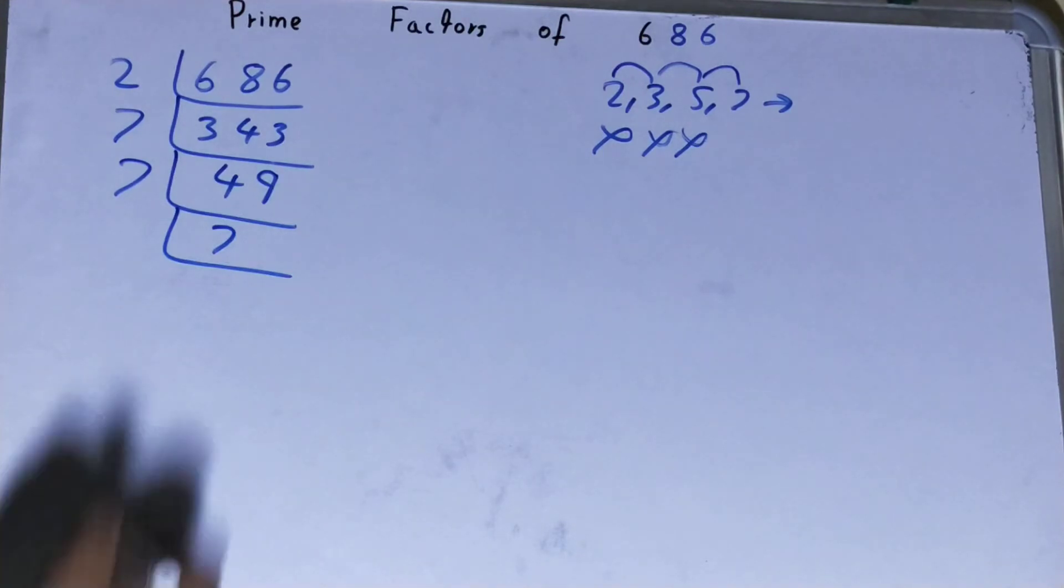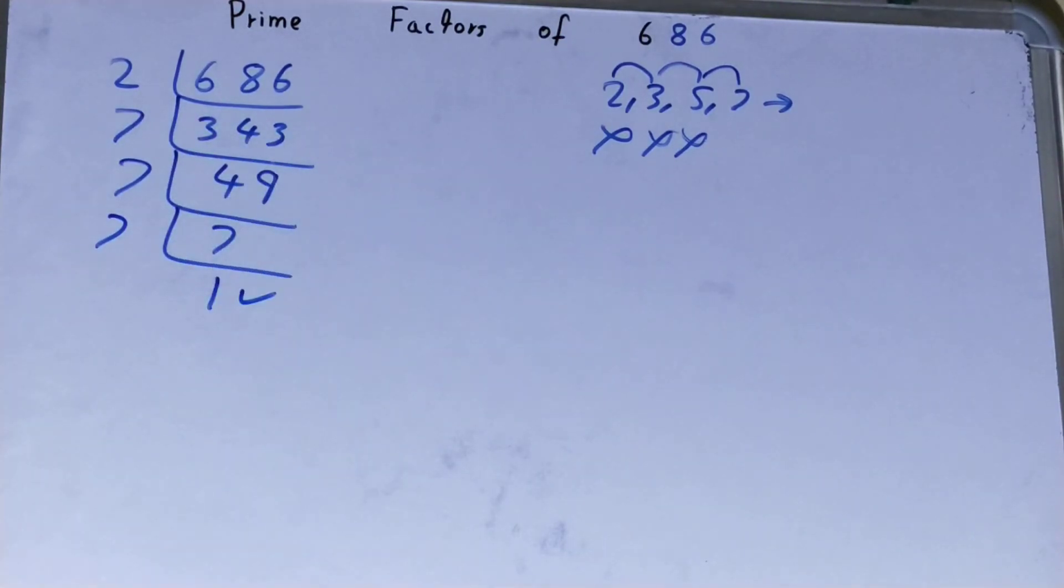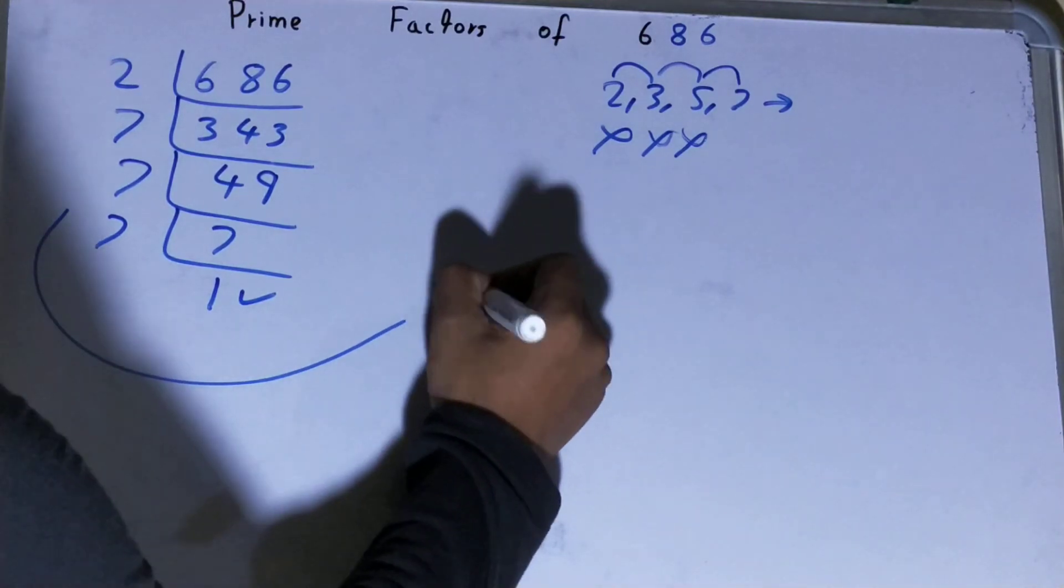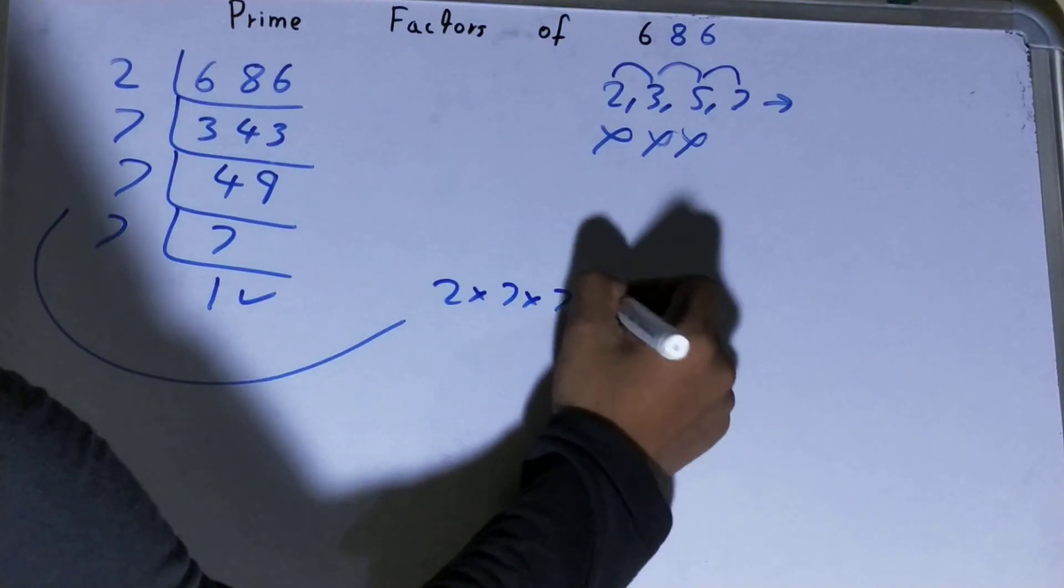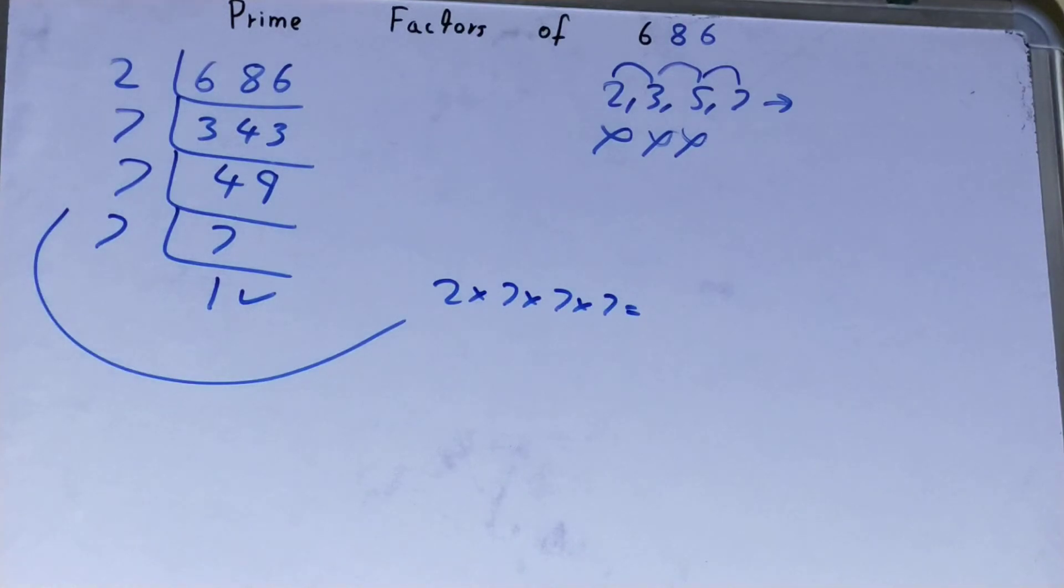And you will be left with 1. Once you are left with 1, the work is done. Whatever you have on the left-hand side will be the prime factors of 686, that is 2 × 7 × 7 × 7. Now if you want to check whether it is right or not, you can multiply it.